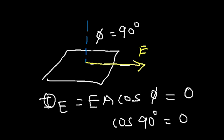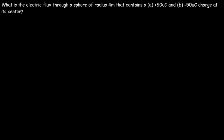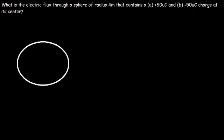Let's try this problem: what is the electric flux through a sphere of radius 4 meters that contains a 50 microcoulomb charge and a negative 50 microcoulomb charge at its center? Here we have a sphere with a positive charge inside. The electric field will always be perpendicular to the surface of a sphere, so the flux is simply the electric field times the area.